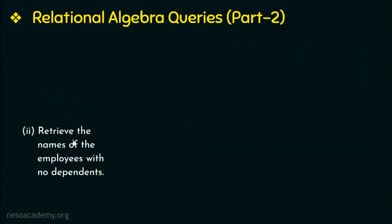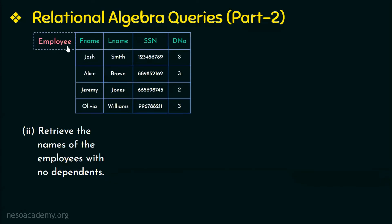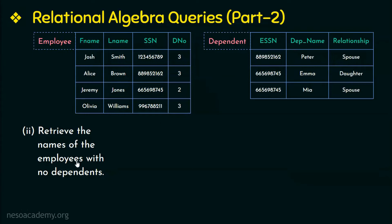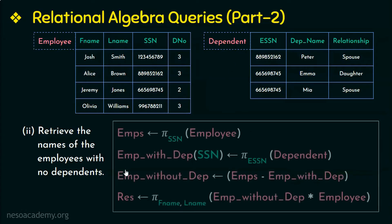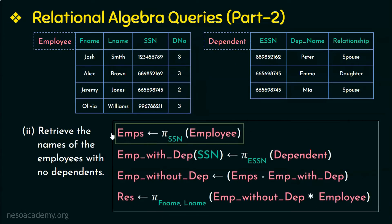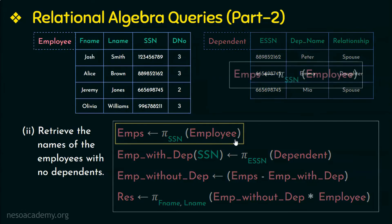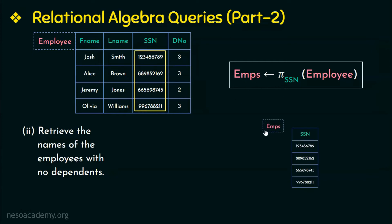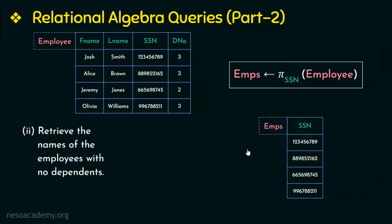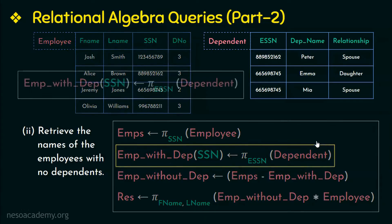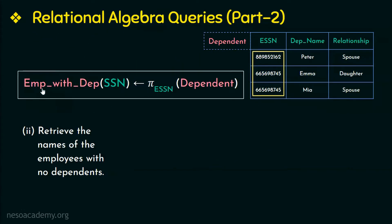Moving on to the next question: retrieve the names of employees with no dependents. We get employee names from the employee relation and dependent details from the dependent relation. To find employees with no dependents, we first list the SSN of all employees, then list the SSN of employees who have dependents, and subtract one from the other. The first step is to project the SSN of all employees from the employee relation and store them. The second step is to project the SSN of employees who have dependents from the dependent relation and store them.